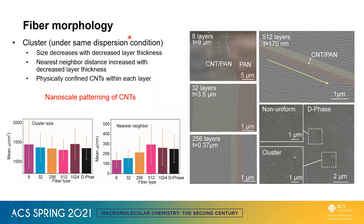After drawing the fiber above its glass transition temperature, we further saw a decrease in the layer thickness, eventually reaching 170 nanometers for the 512-layer fiber. We also saw a decrease in the cluster size and an increase in the first nearest neighbors, both indicating less particle aggregation and more uniform dispersion.